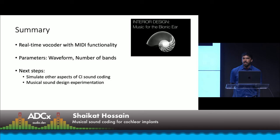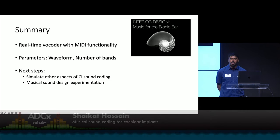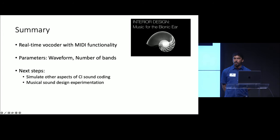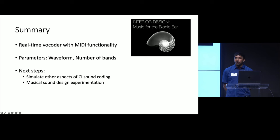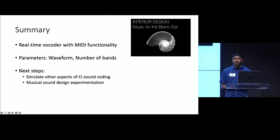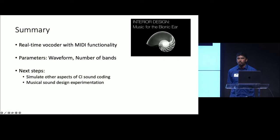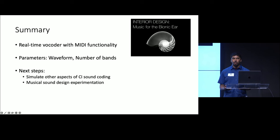In summary, after presenting an introduction on how cochlear implants work, I've shared the design and code behind a real-time vocoder with MIDI functionality and parameters for waveform selection and number of frequency bands. For next steps, I'd like to consider how to simulate other aspects of CI sound coding. In cochlear implants, it's possible to use a technique called current steering, where you can create virtual pitch percepts by steering current between two neighboring electrodes. I'd also like to explore how to use real-time vocoders as a way of experimenting with sound design approaches, treating cochlear implant processing like a musical instrument to reverse engineer music that might sound more pleasant to CI users.